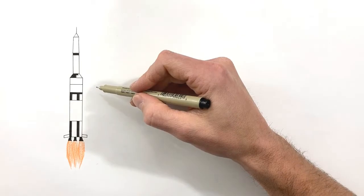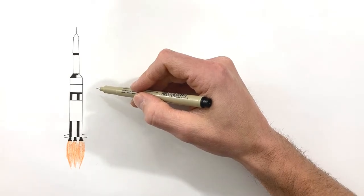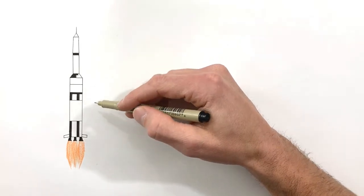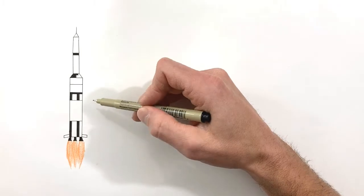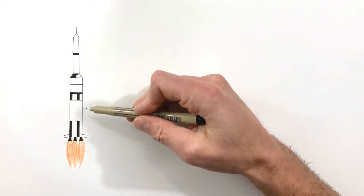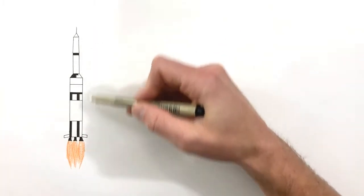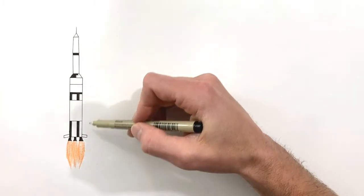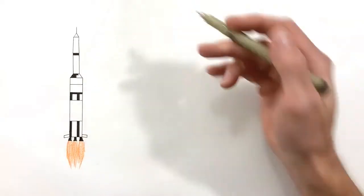Today we're going to take a look at a rocket and derive the rocket equation. The rocket equation describes the change in velocity of a rocket as it takes off under its own power.